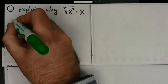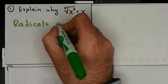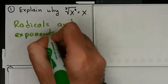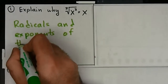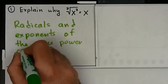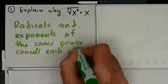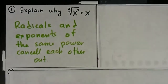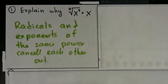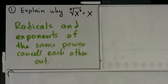The reason this happens is because radicals and exponents of the same power cancel each other out. So in this case the exponent of two and the radical of two simply canceled each other out, leaving us with just the base with no exponent, or an exponent of one. And that's number one.